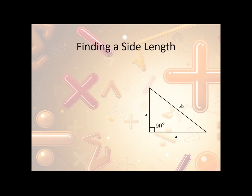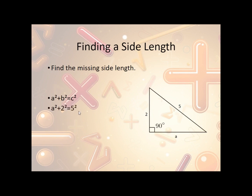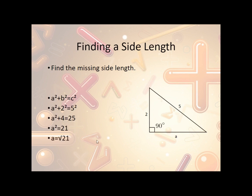Let's look at another example. This time we know the hypotenuse but we don't know one of the legs. So again, A squared plus B squared equals C squared. We'll make A equal to 2, and we know that 5 is C. So A squared plus 2 squared equals 5 squared. 2 squared is 4 and 5 squared is 25. We subtract 4 from both sides and get A squared equals 21. The square root of 21 doesn't go in evenly, so we round it to 4.58.